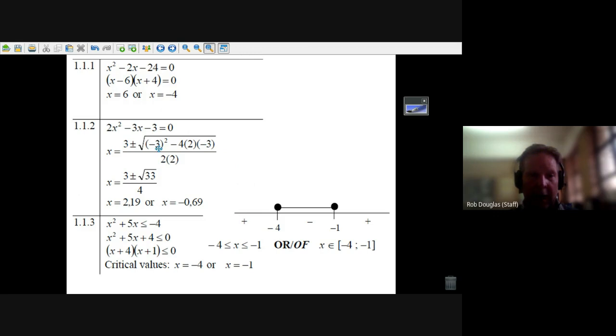b squared minus 4ac over 2a. There it is. You don't want to put all that in your calculator. You want to go 9, two minuses make a plus 30—9 plus 24—and you get 33. You want to put that in your calculator: 3 plus root 33 over 4 and 3 minus root 33 over 4.